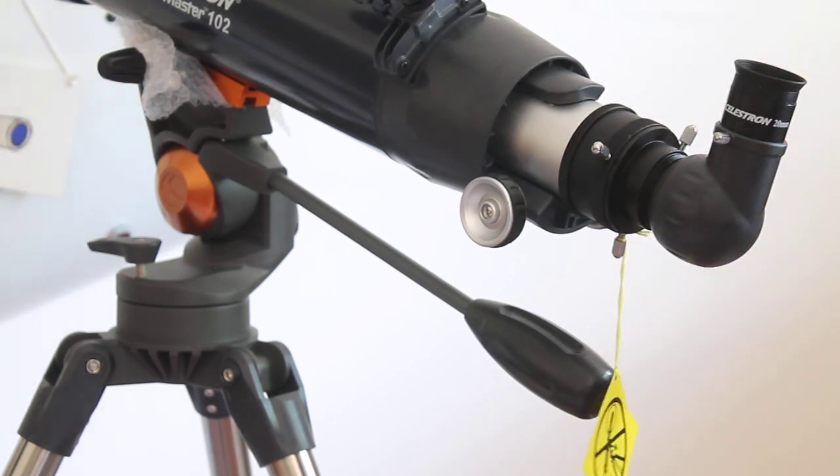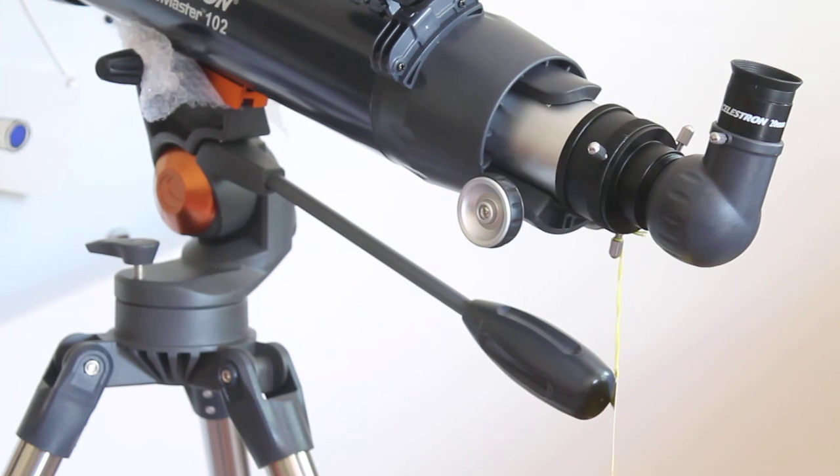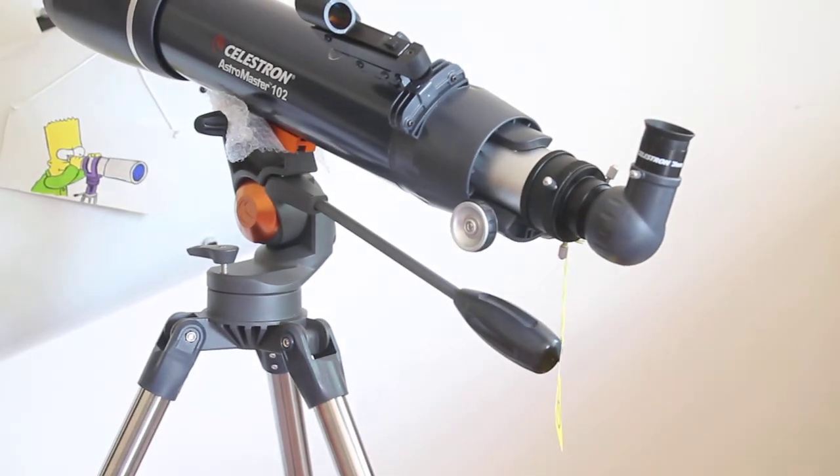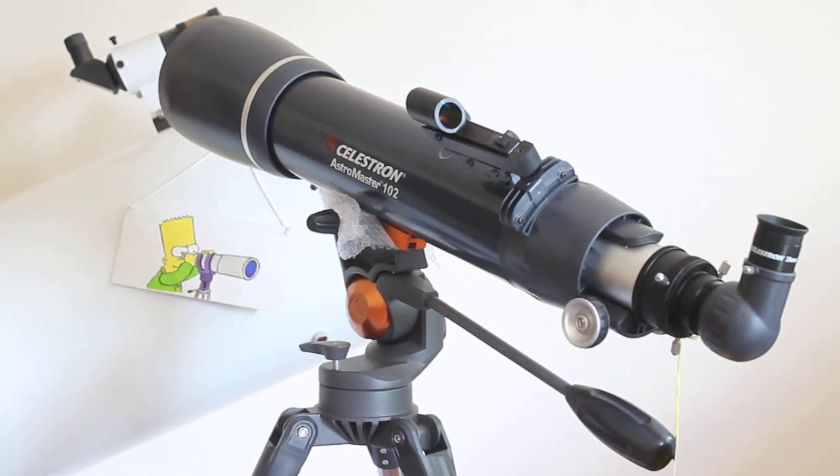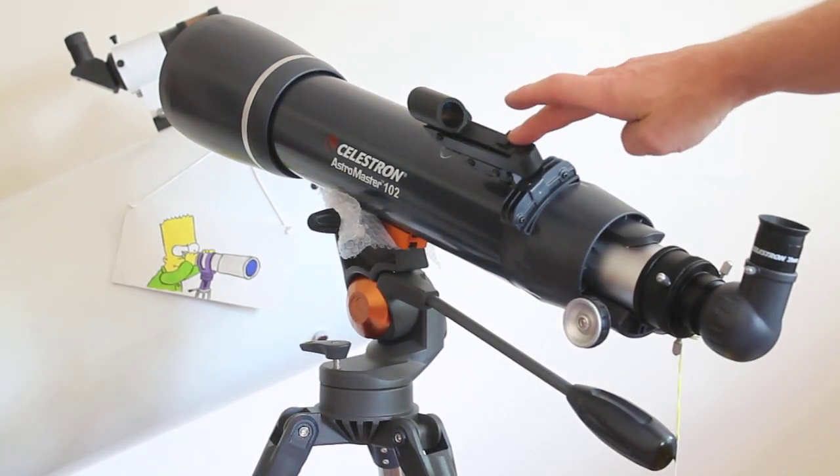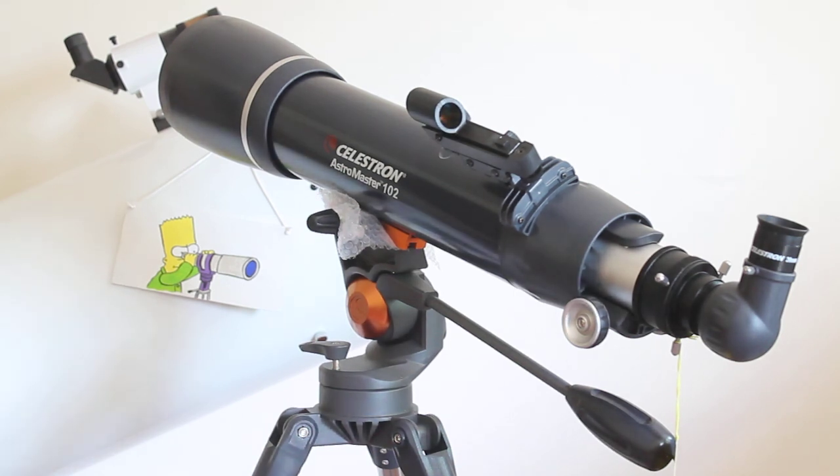So that's a quick look around the Celestron Astromaster 102 AZ. It comes with a red dot finder. There is no fitting I can see if you want to put a visual finder scope on there, but by all means, if you've tried the telescope, let us know what you think about it in the comments below.